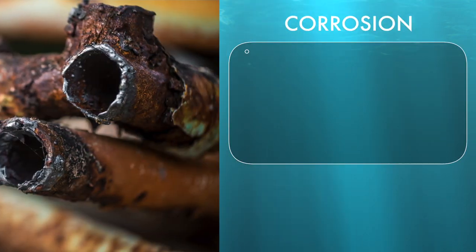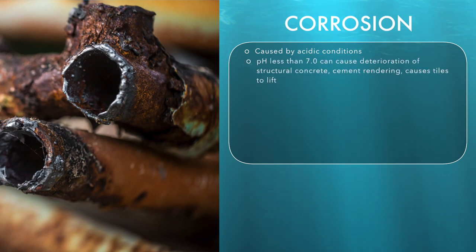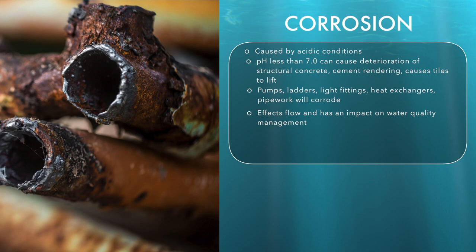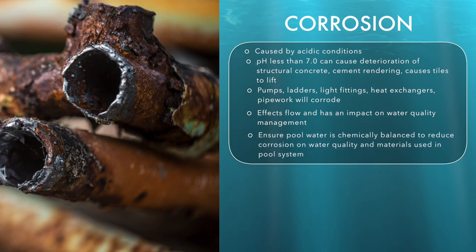Corrosion in pool structures is caused by prevailing acidic conditions, that is, a pH of less than 7.0. Such conditions can cause deterioration of structural concrete, cement rendering, other surfaces and cause tiles to lift. Metal fittings including pumps, ladders, underwater light fittings, heat exchangers and pipework will also corrode. This will affect flow and have an impact on water quality management. It is very important to ensure that the pool water is chemically balanced to reduce the effects of corrosion on pool water quality and the materials used in the pool system.